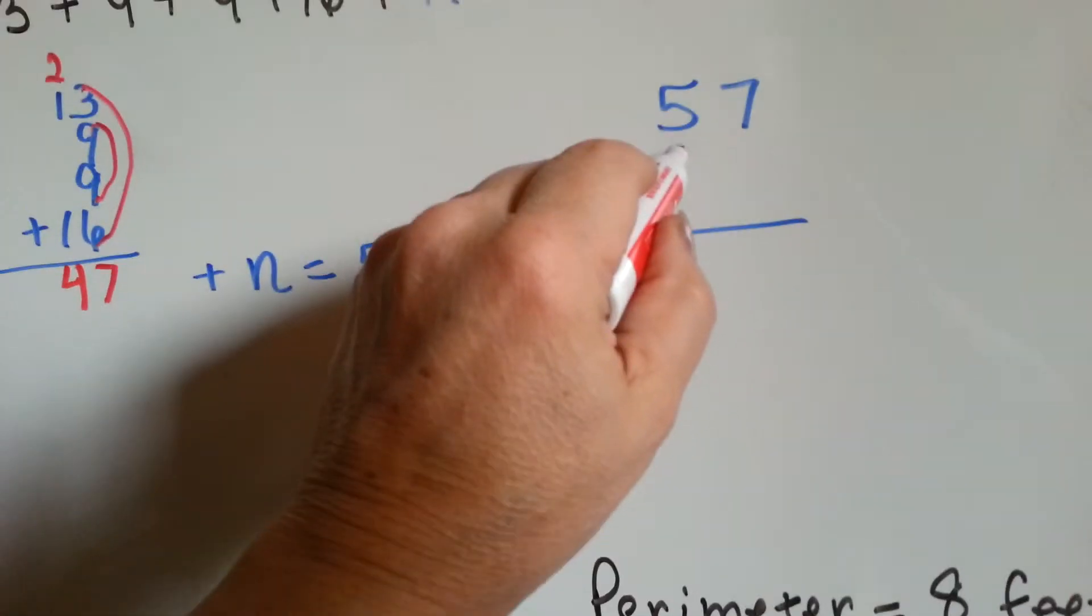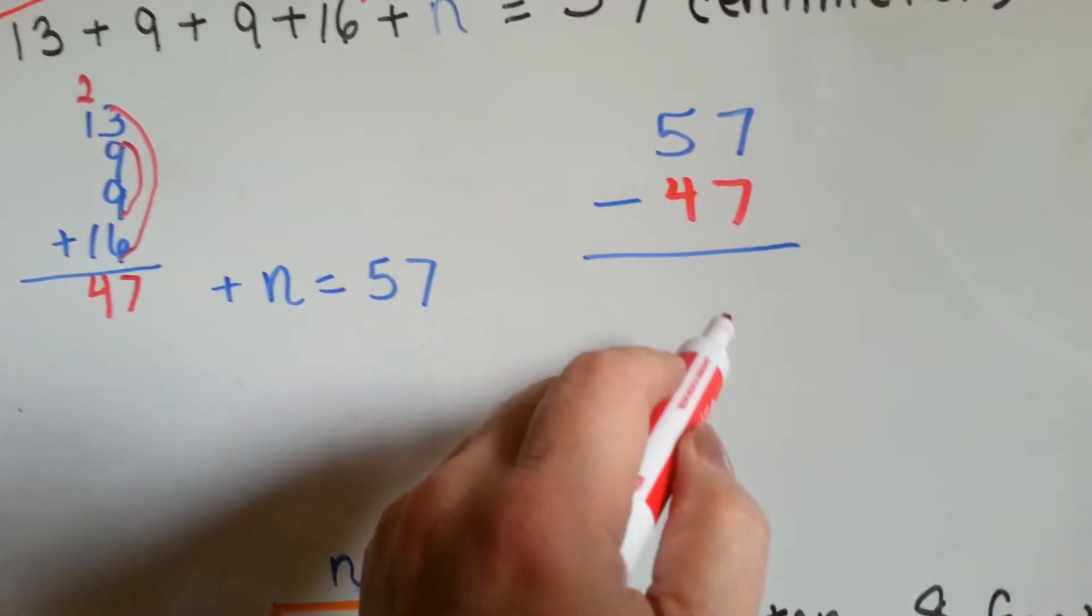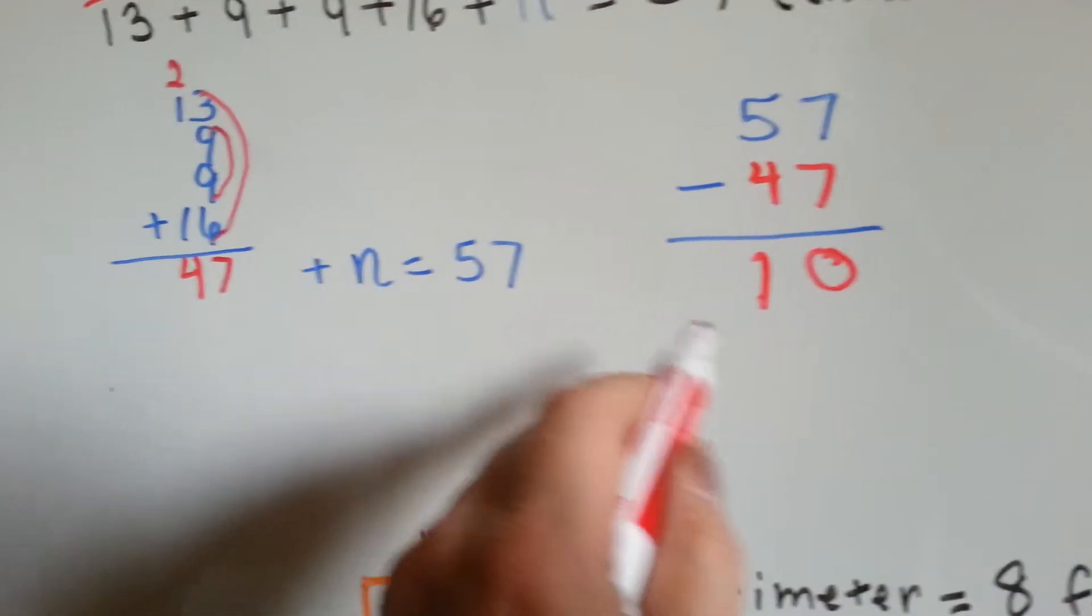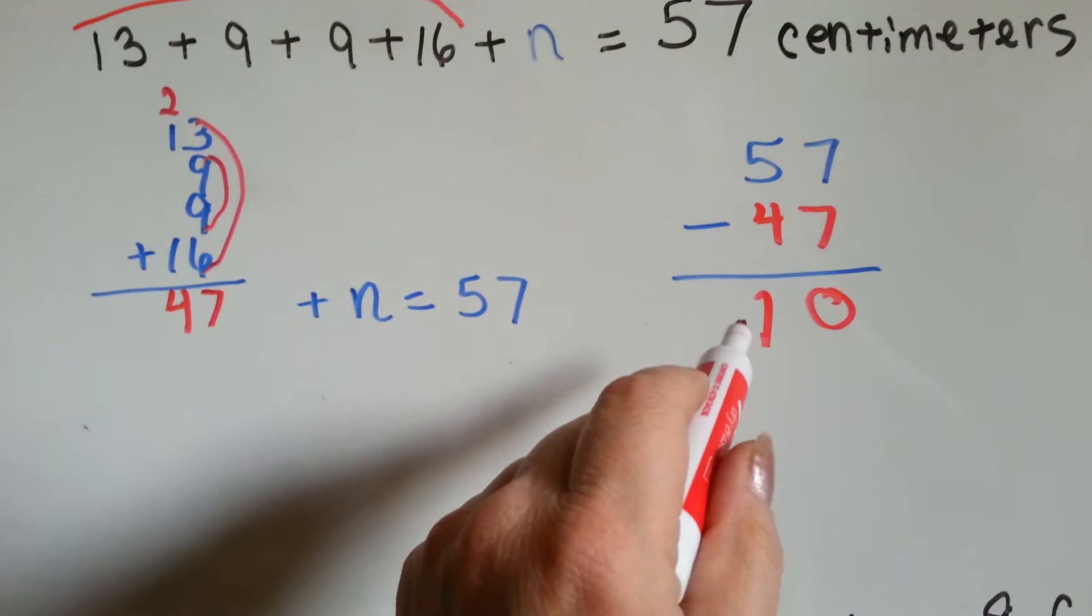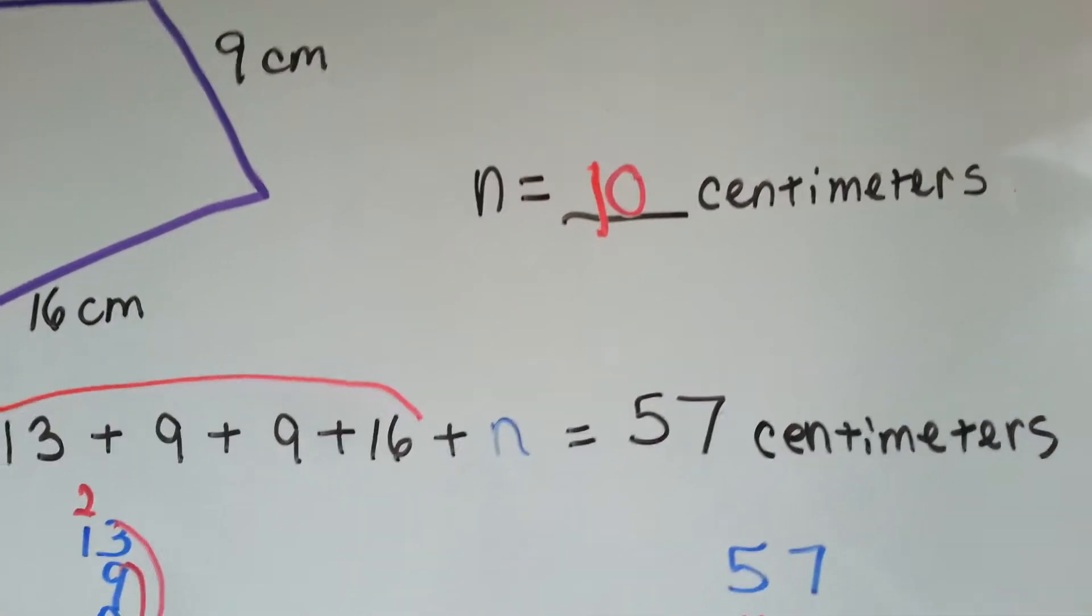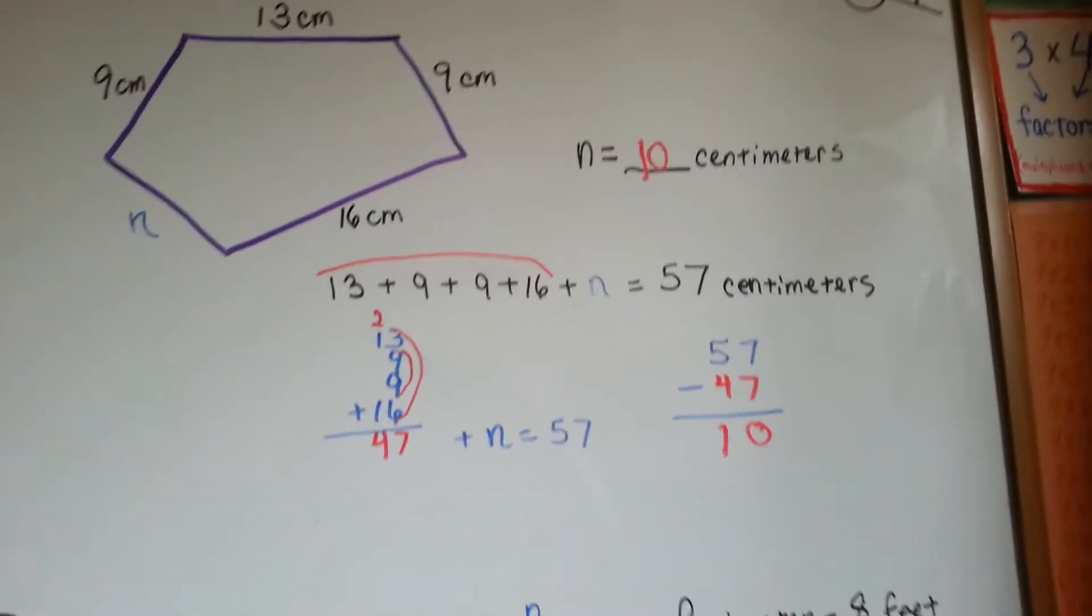We put the 47 here. We do our subtraction, and we find out that what's left over is 10. So n must equal 10 cm. See that? There's a couple steps to this, but it's really easy when you think about it.